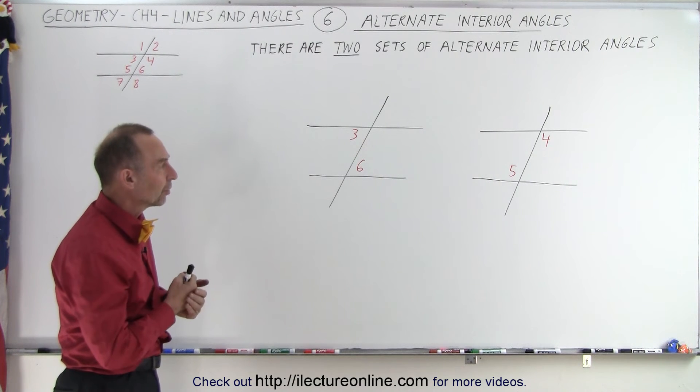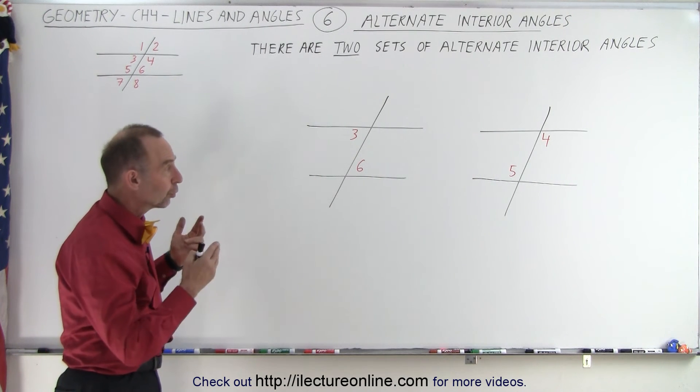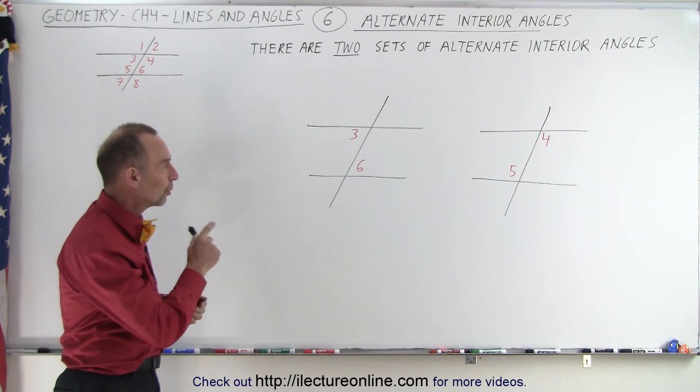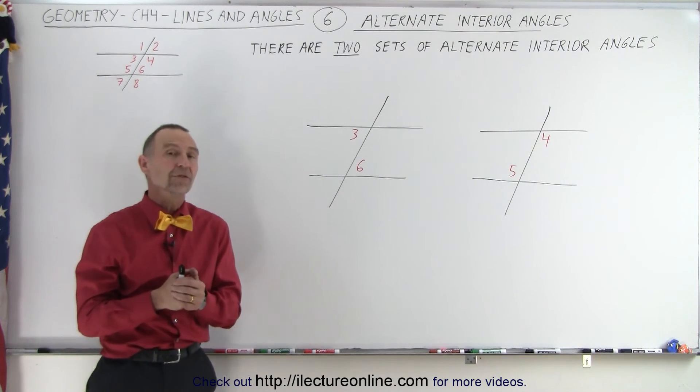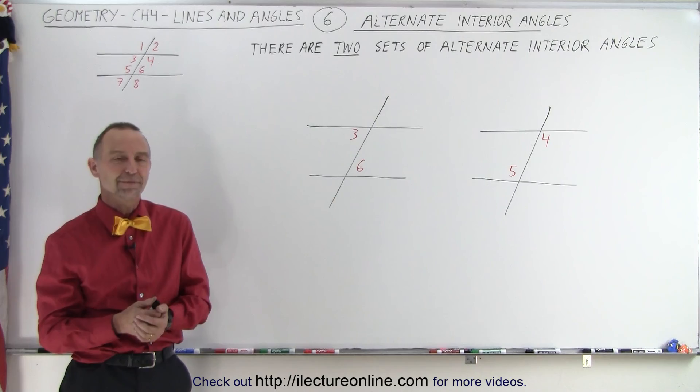Alternate interior angles, there's two sets, are congruent in any case where the two lines that the transversal crosses are parallel, and that's how it is.